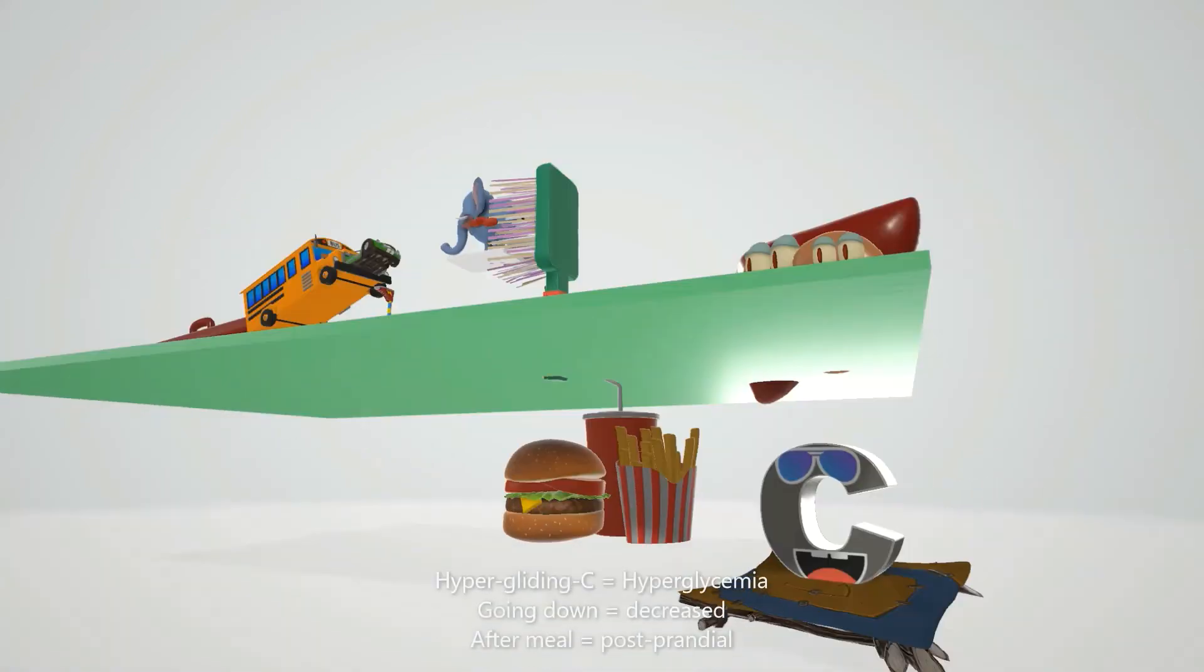Which leads to this random hyper C over here. You notice this hyper C, the hyper C that's gliding. The hyper gliding C for hyperglycemia, and he's going down, he's under the scene, he's going down for decreased postprandial hyperglycemia. And this meal over here is to help us remember postprandial.